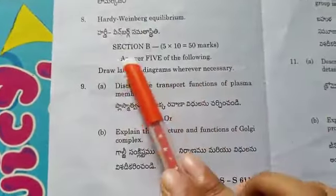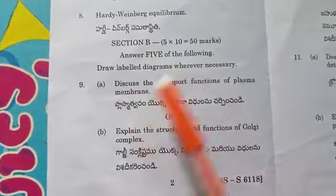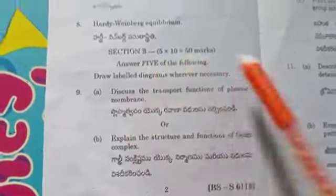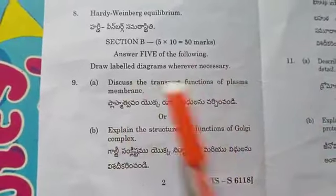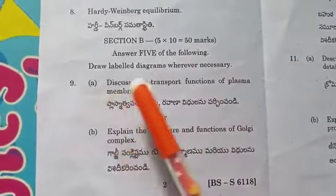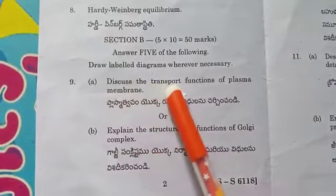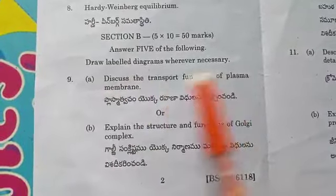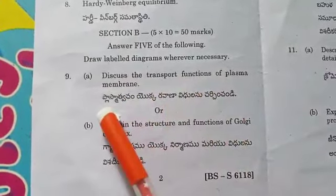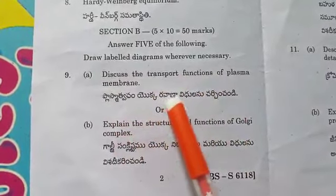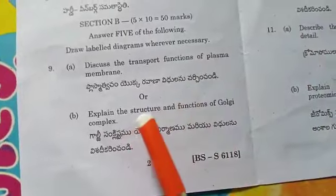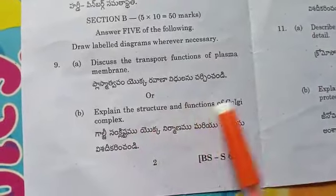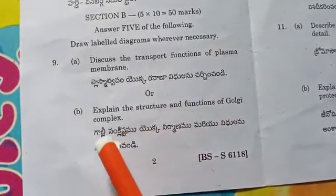Section B, five marks each. Question nine: Discuss the transport functions of plasma membrane. Question ten: Explain the structure and functions of Golgi complex.